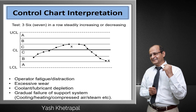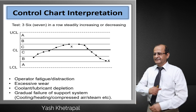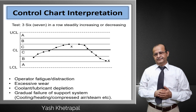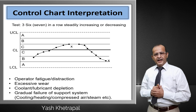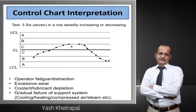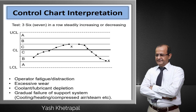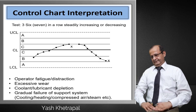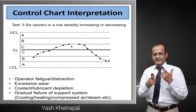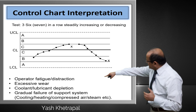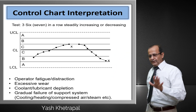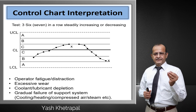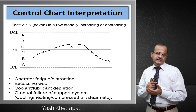Rule 3: 6 points in a row steadily increasing or decreasing — there is a pattern. Why? Could be the operator, distraction, excessive tool wear, depletion of coolant, or tool wear causing dimensional variation. It could also be any failure of support systems such as the cooling system, heating system, compressed air, etc.